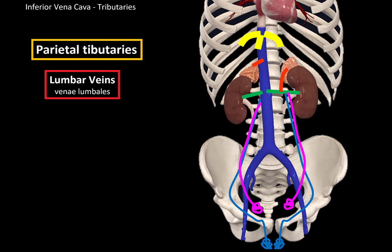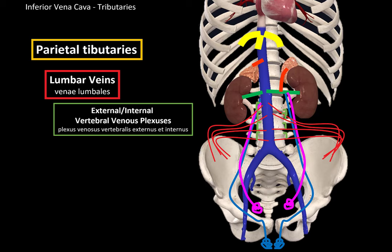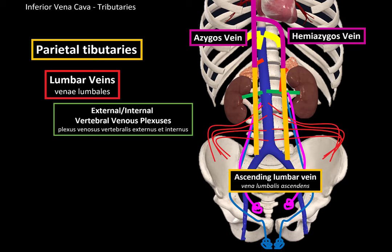The parietal branches are quite easy. We have the four pairs of lumbar veins, which follow the lumbar arteries and mainly drain the posterolateral abdominal wall and the lumbar structures of the back. Lumbar veins also communicate with the external and internal vertebral venous plexus to drain structures like the spinal cord, and they communicate with the ascending lumbar veins on either side, which drain into the azygos and hemi-azygos veins.